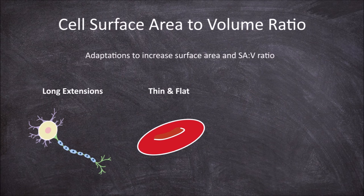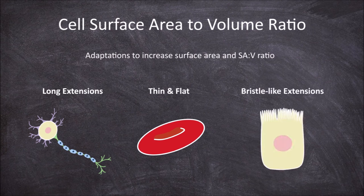A second type of adaptation is being thin and flat, as this increases the surface area to volume ratio. This is seen in red blood cells, which are flattened into a biconcave shape. A third type of adaptation is having bristle-like extensions called microvilli, which increase the total membrane surface of the cell, increasing the surface area to volume ratio. This is seen in cells in the intestine.